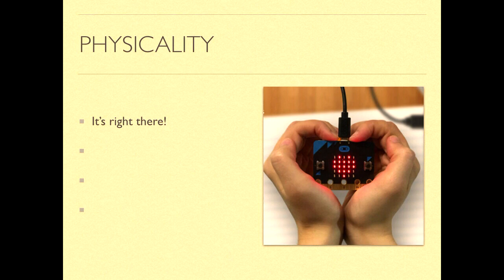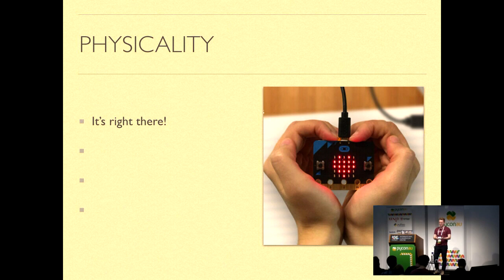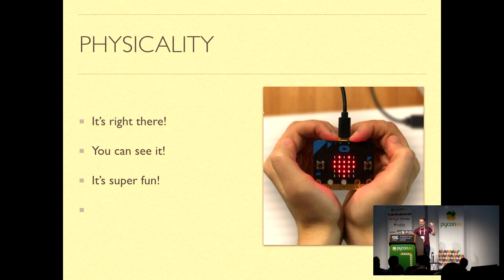So what does the physicality actually mean? It's right there. You can see it, you can feel it. When the program doesn't work, you can see how it doesn't work a lot of the time. If you're expecting it to show a smiley face and it shows a sad face, it's not just some text on a screen, it's lights on the micro:bit. And that really works well for a lot of kids.